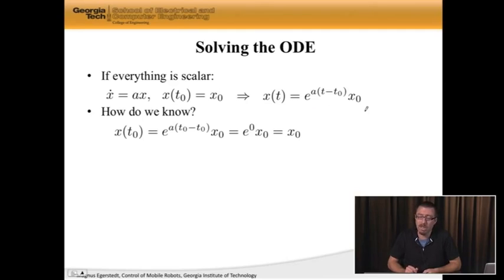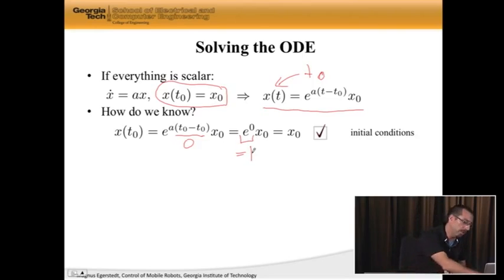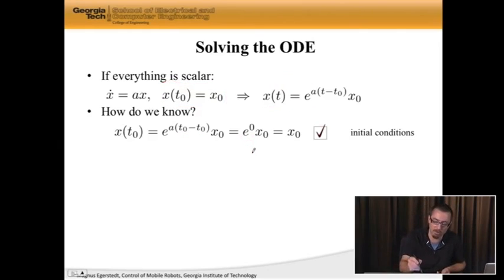How do we make sure that this is correct? Well, the first thing you have to do is make sure that the initial conditions are right, meaning that my solution here actually respects this initial condition. So what I'm going to do is I'm just simply going to plug in t naught here and see what I get. Well, if I do that, I get x of t naught is e to the a, t naught minus t naught times x naught. Well, this thing is zero. So I get e to the power zero x naught, and e to the power zero is always equal to one. So the exponential evaluated at zero is one. So x of t naught is equal to x naught, which means that the initial condition is correct.